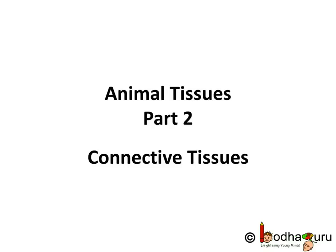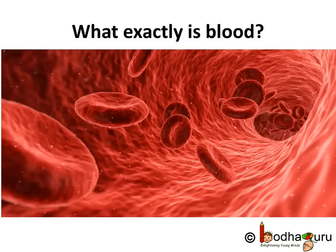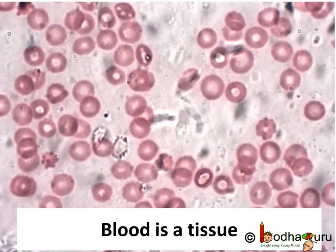Good morning everyone. Today we shall learn about various connective tissues in animals. We all know it's the blood, a red liquid that keeps us alive, and we know how important blood is. But what exactly is blood? Blood may look like a red liquid, but it has different cells and it is also a tissue.